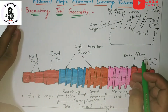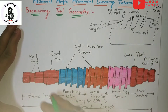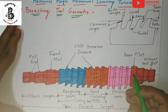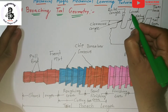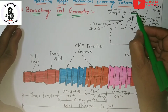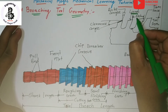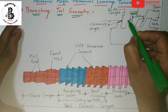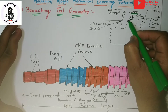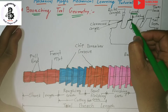In the broaching tool there are a number of parts you can find. Starting with the first one, which is called the land. Generally the land is the top portion of the tool, and it is normally ground slightly to provide the clearance. So you can see that the land is located on the broach tool.